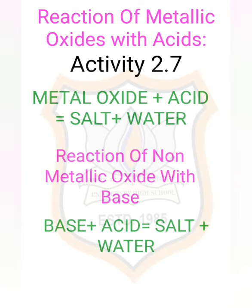Now, the reaction of non-metallic oxides with bases follows the same pattern as metallic oxide plus acid. The reaction between carbon dioxide and calcium hydroxide (lime water) was already discussed in Activity 2.5. Calcium hydroxide, which is a base, reacts with carbon dioxide to produce a salt and water, since this is similar to the reaction between a base and an acid. We can therefore conclude that non-metallic oxides are acidic in nature.